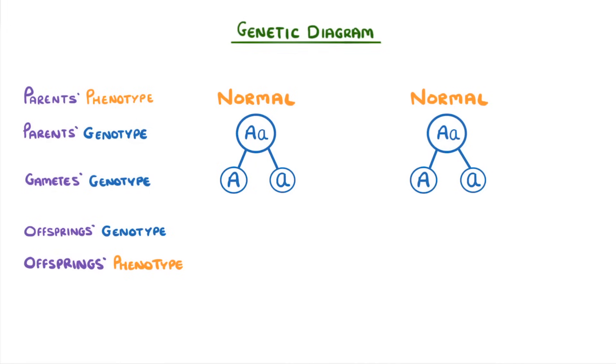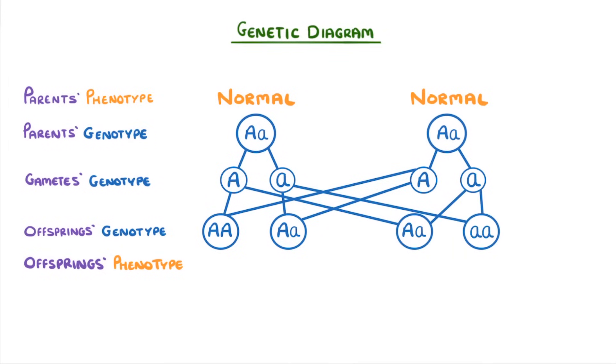Which means that when we mix them to get the offspring, we'll get one homozygous dominant, two that are heterozygous, and one that's homozygous recessive. So just like with the Punnett square, the phenotypes would be three normal and one muscly.